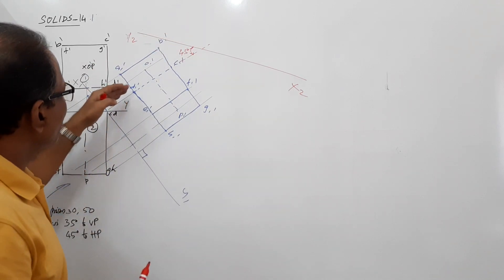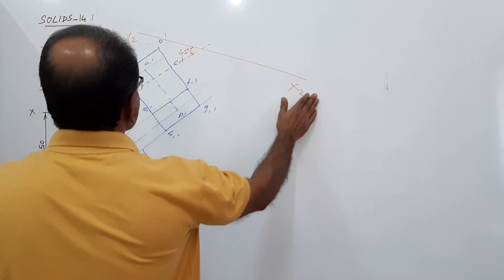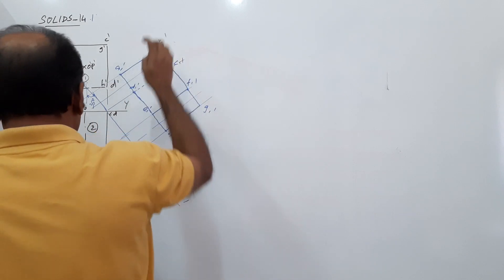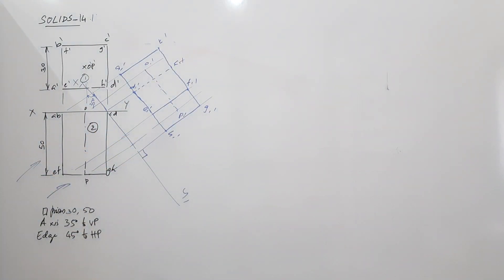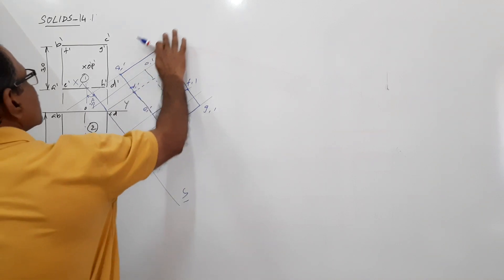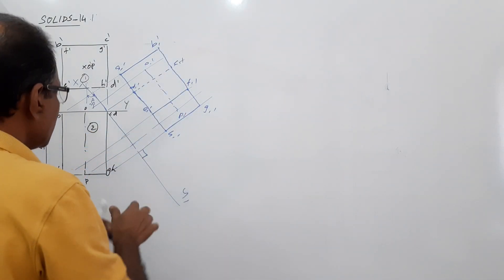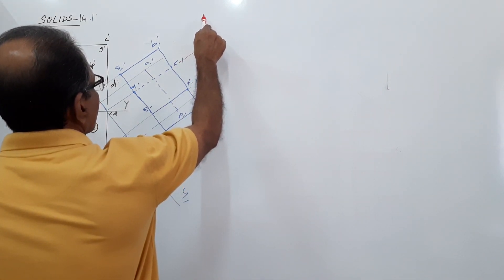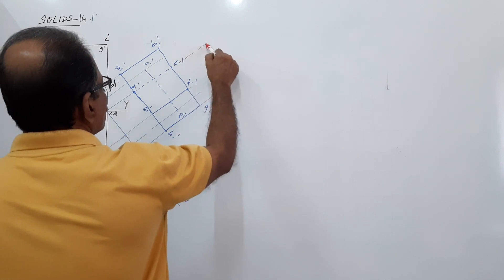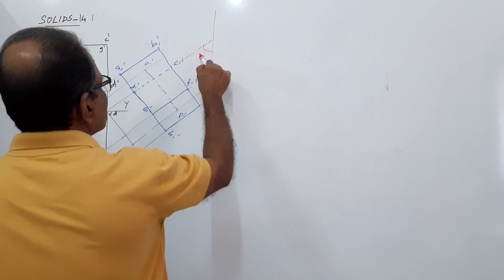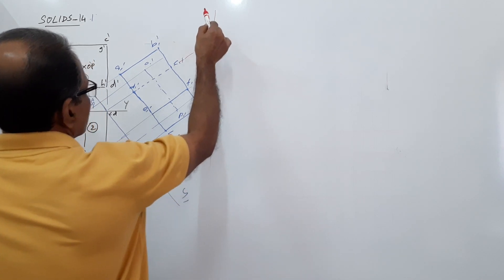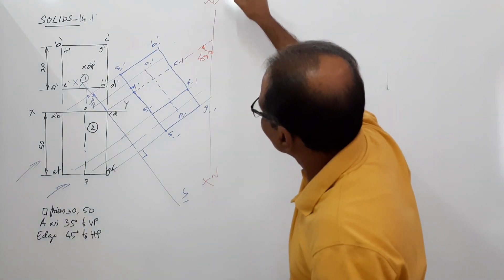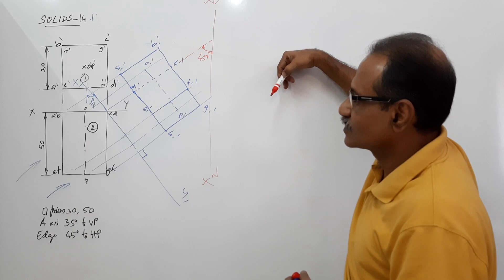I will change the position of X2Y2 for you to become more comfortable with the orientation. I will make X2Y2 here so that this angle is 45. This is the plan, this is the elevation. So this is X2Y2 — you are going to draw a plan here.